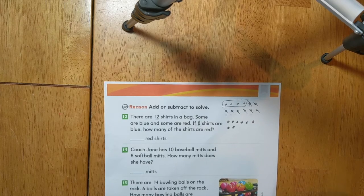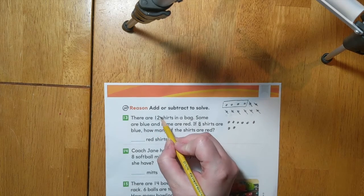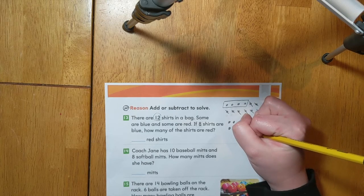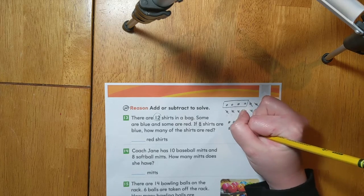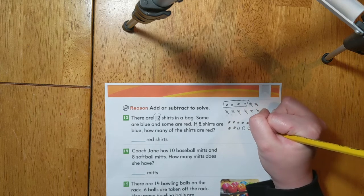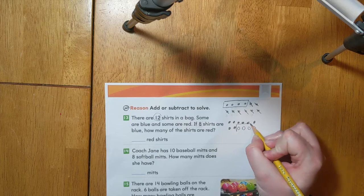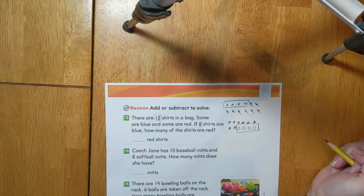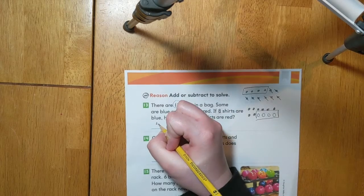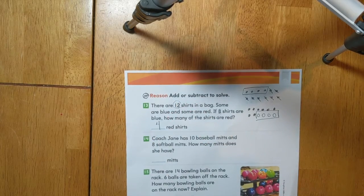Now we can count on until we get to 12. I'll show this by drawing open circles. So we have 8, 9, 10, 11, 12. And that gives me a total of 4. So we know that there are 4 red shirts in the bag.